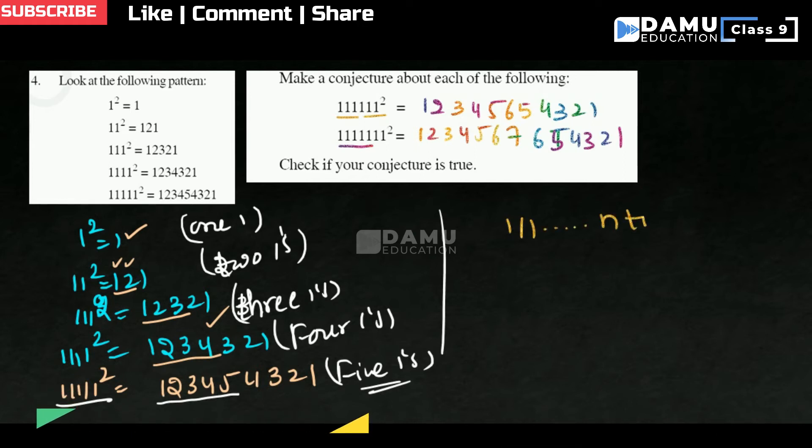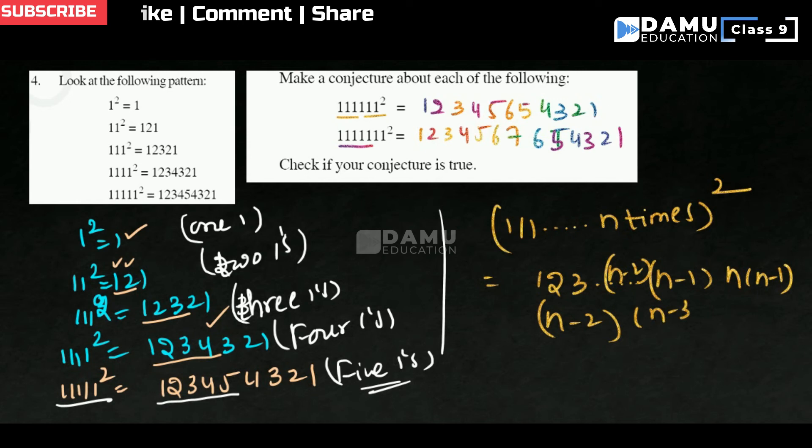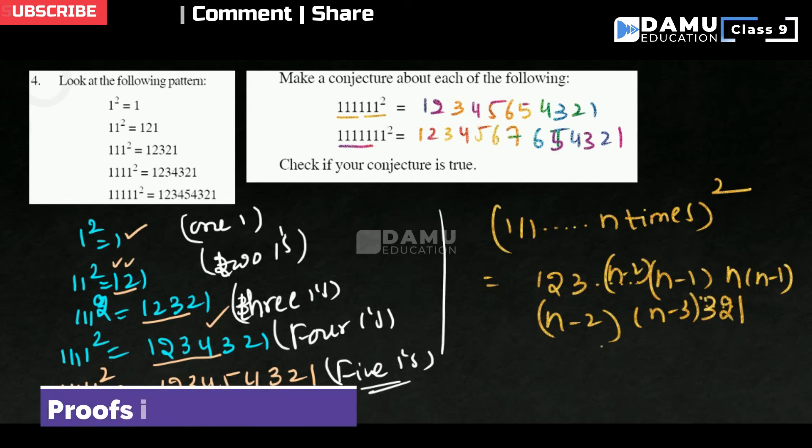It is coming that n times whole square will be equal to what you can write? 1, 2, 3 and so on. What you can get here is n-1, then n, then n-1. Here n-2 will be. The left side it is increasing and right side it is decreasing. So n-2, n-3 up to dot dot dot 1. So 1, 2, 3, 2, 1. This is the way.